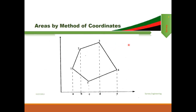For areas by the method of coordinates, you can see a closed traverse with five different stations numbered 1, 2, 3, 4, 5. If perpendiculars are drawn from all these stations to the x-axis, they are termed as the station coordinates. The line from station 1 is Y1, from station 2 is Y2, and similarly Y3, Y4, and Y5 represent perpendiculars from stations 3, 4, and 5 to the x-axis. Similarly, X1, X2, X3, X4, and X5 are the horizontal distances from the y-axis to stations A, B, C, D, and E respectively.